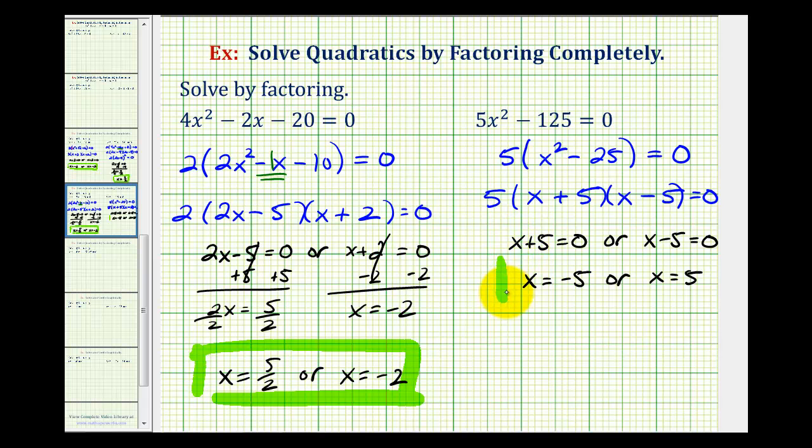So here are our two solutions. If we wanted to, we could write this as x equals plus or minus 5, a shorter way to represent a solution of positive 5 and negative 5. I hope you found this helpful.